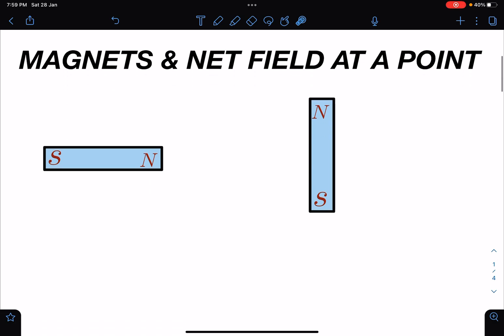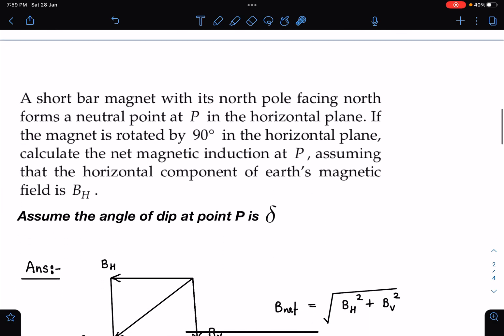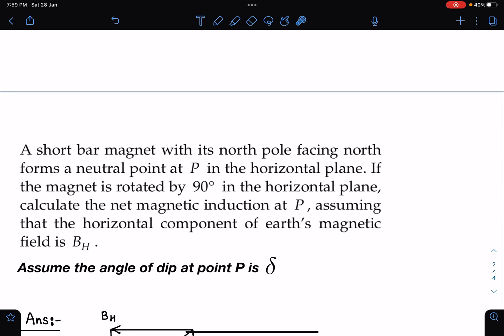So we will be discussing about this. Here is the problem statement. A short bar magnet with its north pole facing north forms a neutral point at P in the horizontal plane. If the magnet is rotated by 90 degrees in the horizontal plane itself, then calculate the net magnetic induction at P, assuming that the horizontal component of Earth's magnetic field is BH.